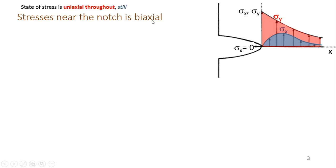Near the notches the stress is biaxial. Every area is uniaxial except near the notch. If we represent this: if I have a notch and I consider distance in the horizontal direction, very far from the notch there is no stress in the x-direction — only in the y-direction — so it is uniaxial. Sigma x is zero far away. Sigma y is the applied load. But as I move closer to the notch, sigma y grows and sigma x also begins to appear.